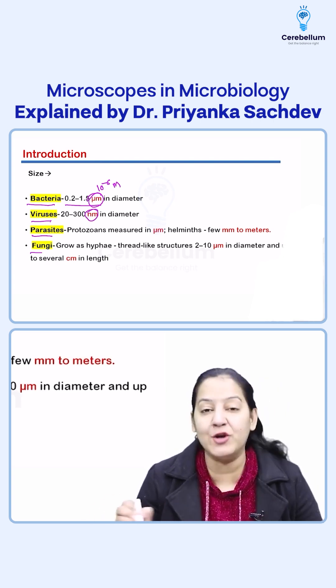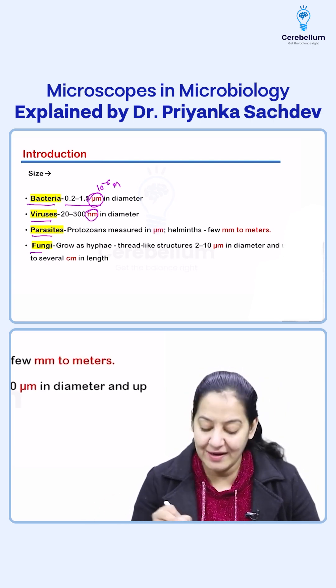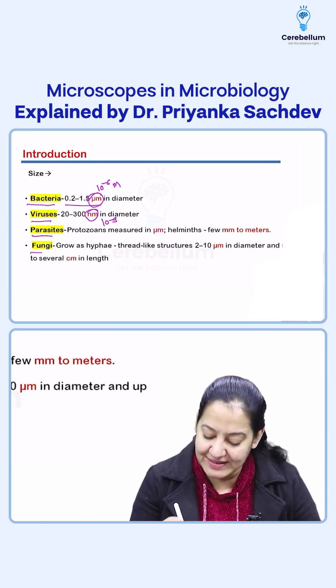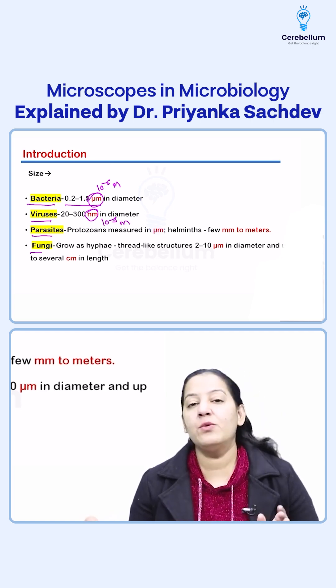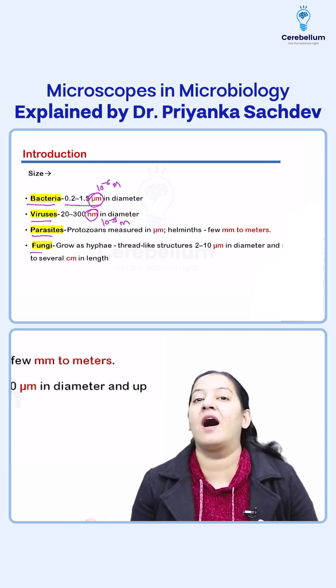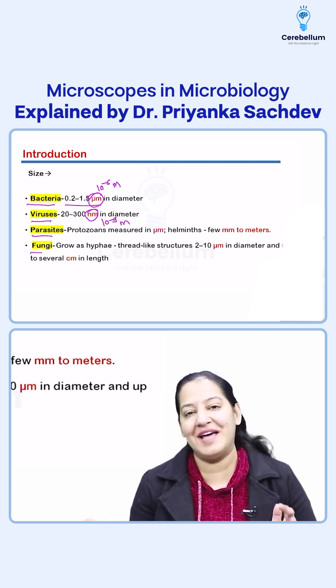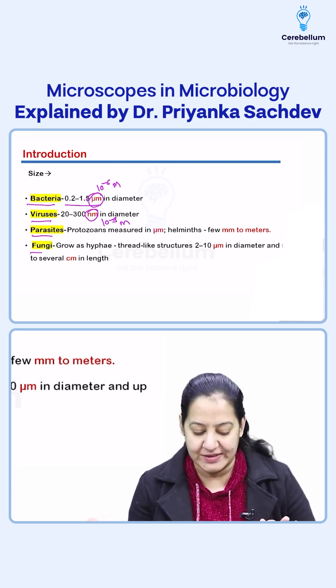The viruses are measured in nanometers. What is nanometer? It's 10 to the power minus 9 of a meter. So we can see the viruses are thousand times smaller than bacteria. I guess everyone knows it, right?